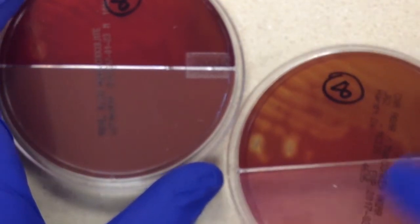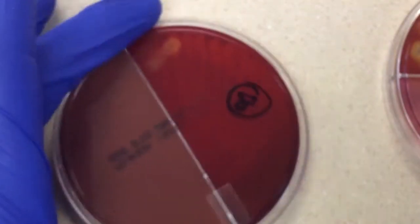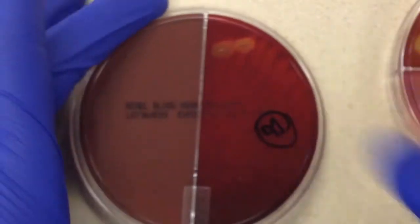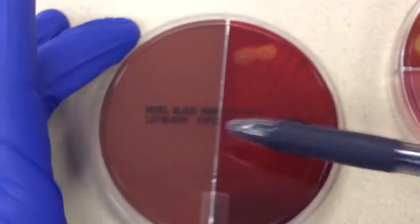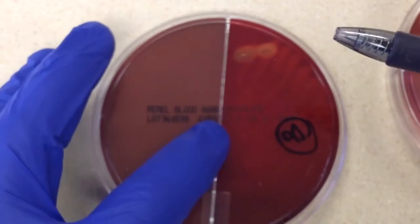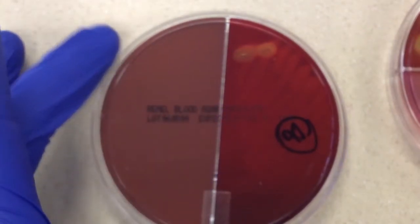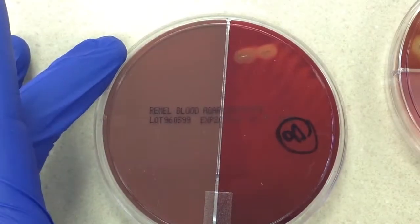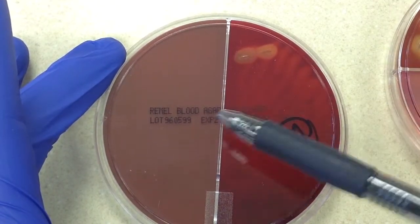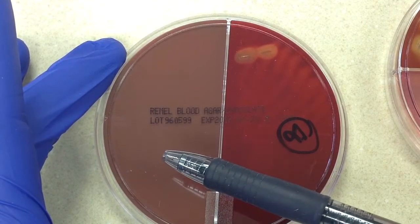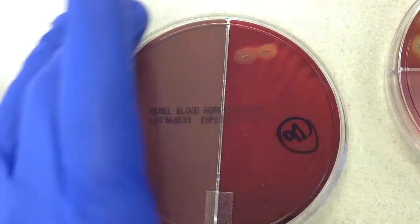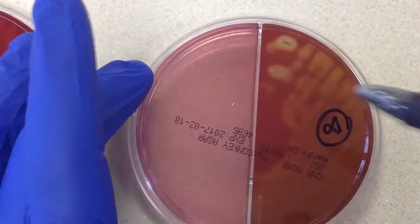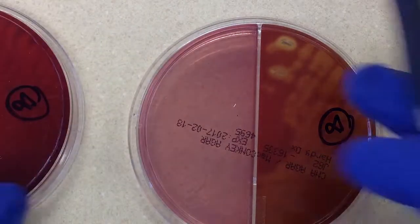So on this particular culture, let's see if we can get it to come into focus here. It's probably driving you guys nuts. Okay, there we go. So we have a bi-plate of chocolate and sheep blood, and then we have a McConkey's and CNA.